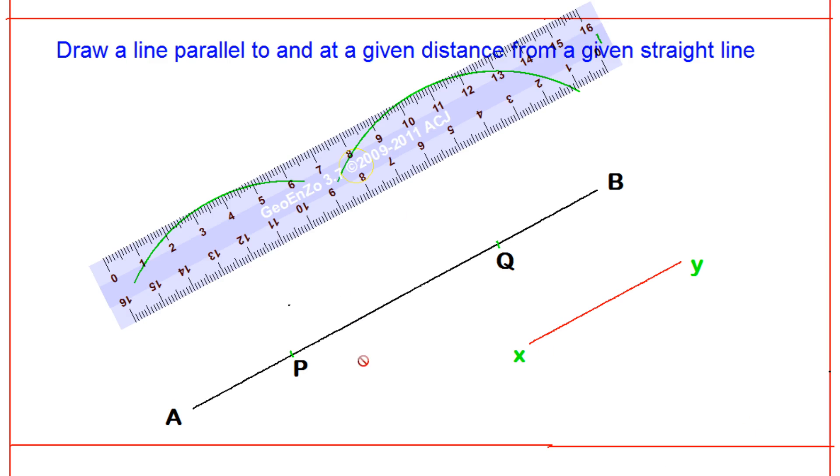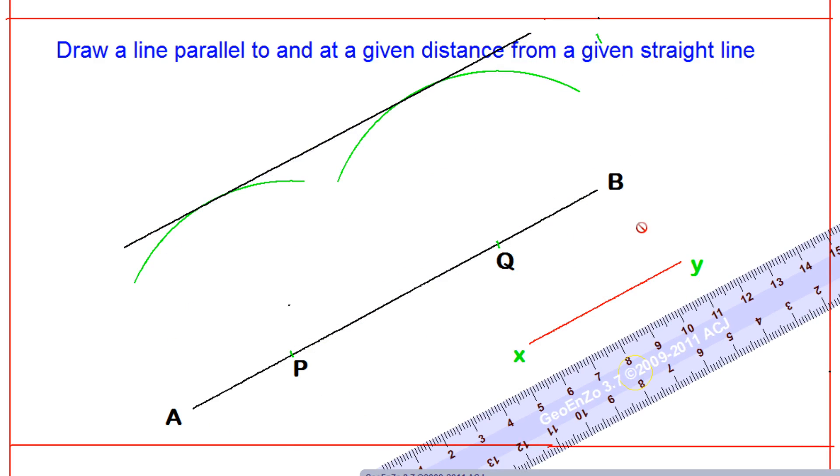Let me take the black color and I will connect it here. So this is the line that I have drawn which is parallel to the given line AB. I can give the name here, let us say this given line is C and D.